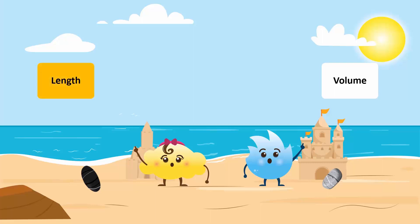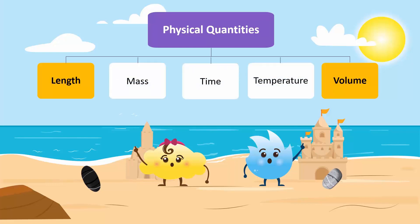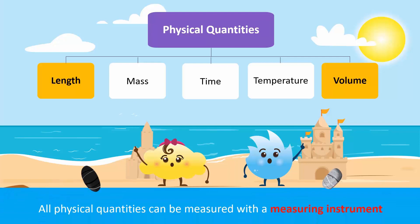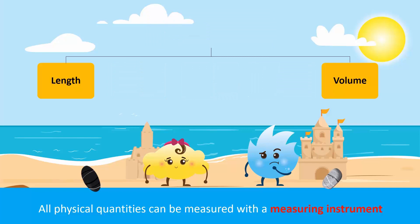Length and volume are called physical quantities. Other examples of physical quantities are mass, time, temperature, and so on. All physical quantities can be measured with a measuring instrument. For instance, we measure temperature with a thermometer and time with a stopwatch. So Bubbles and Spiky don't have to argue — we can measure whose pebble is the biggest.